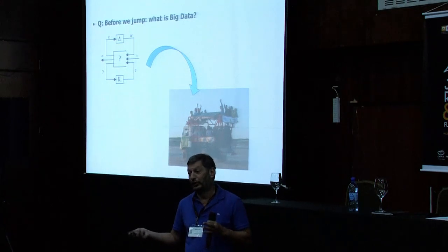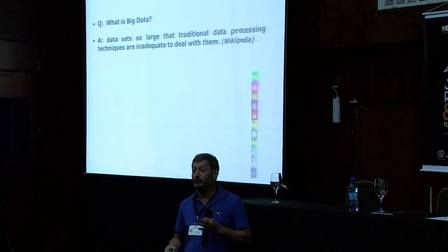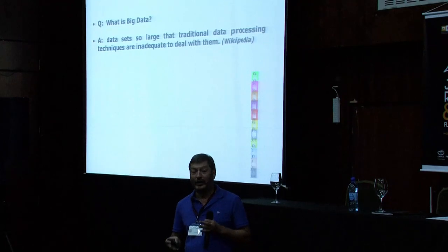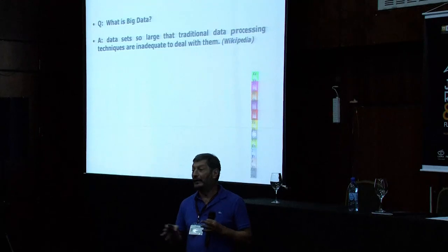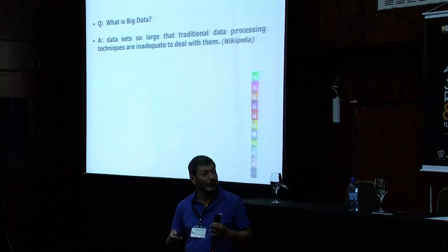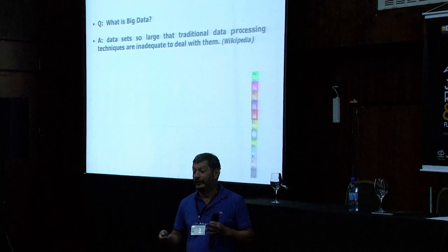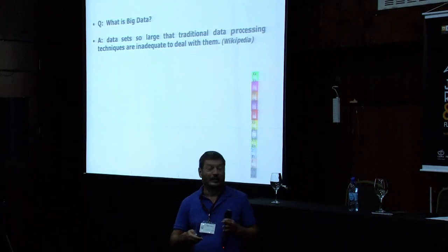Big data is whatever your algorithms cannot handle. So clearly, big data is problem-dependent. Maybe big data for control is different than big data for machine learning. Then you turn the problem around and say, what makes data big? If we don't know what big data is, what makes data big or small? You can say big data means big data — very long feature vectors, very long output vectors. Not true.